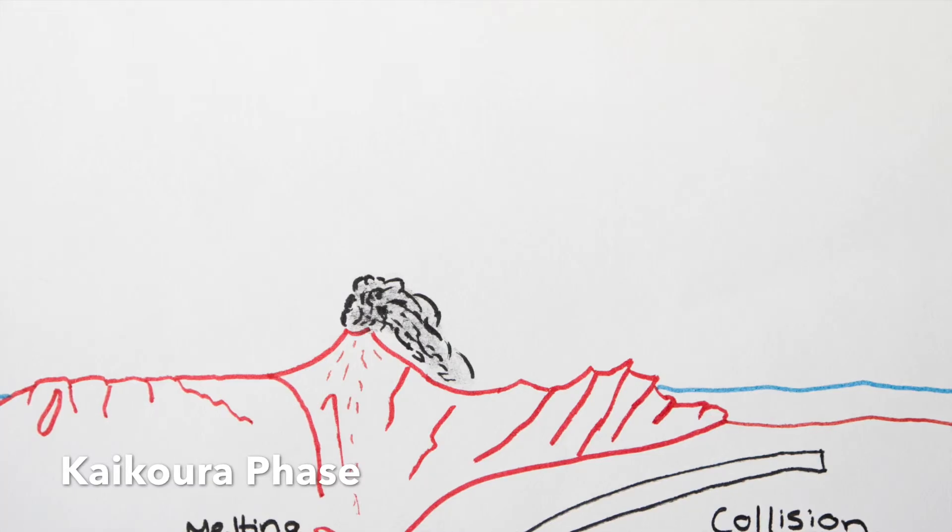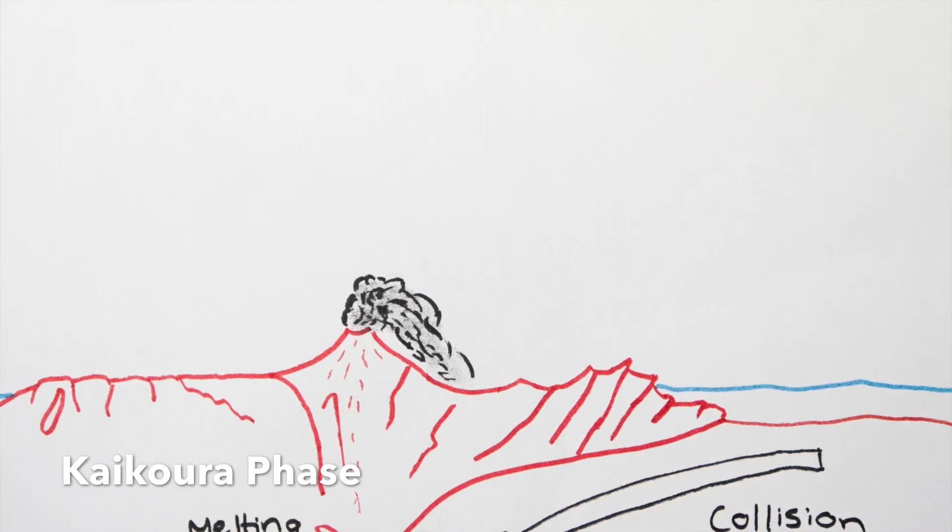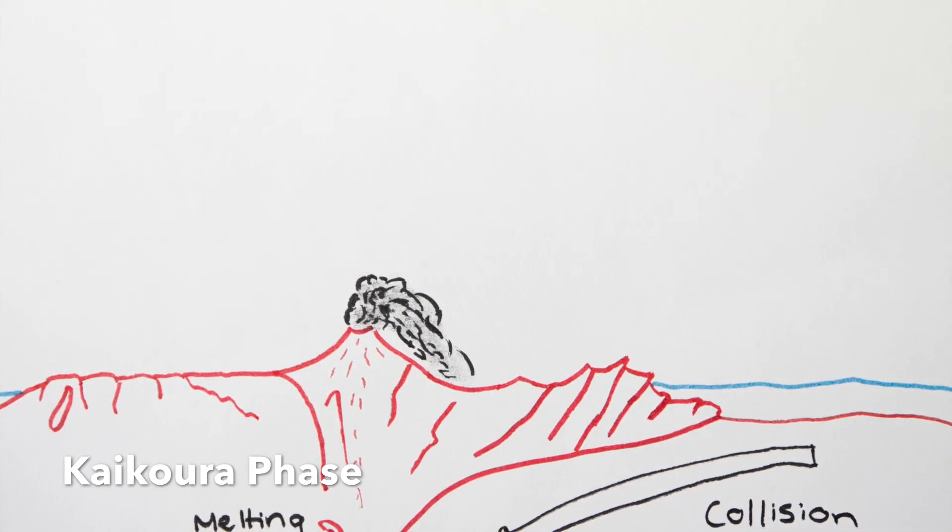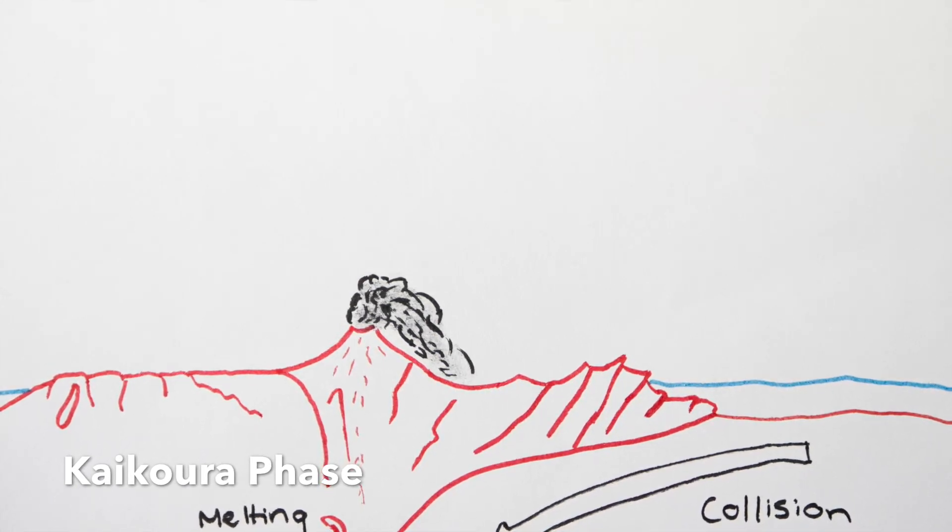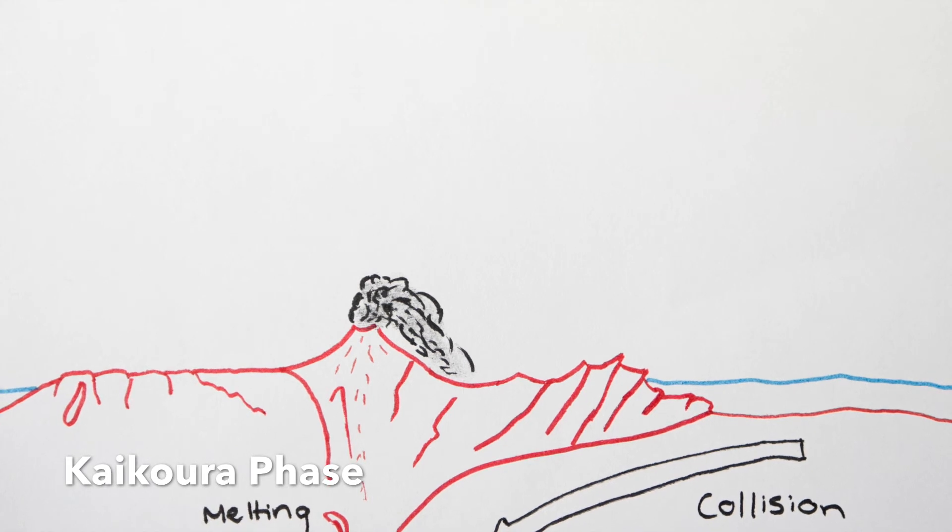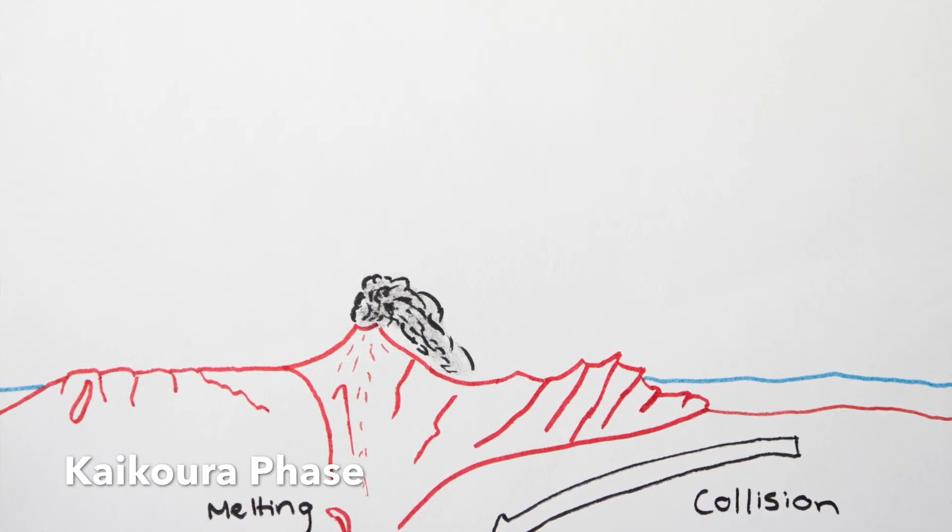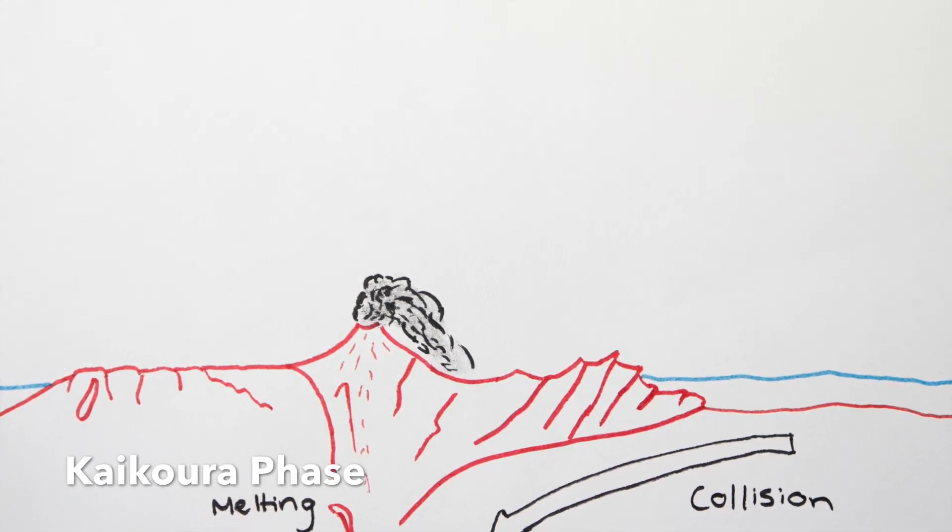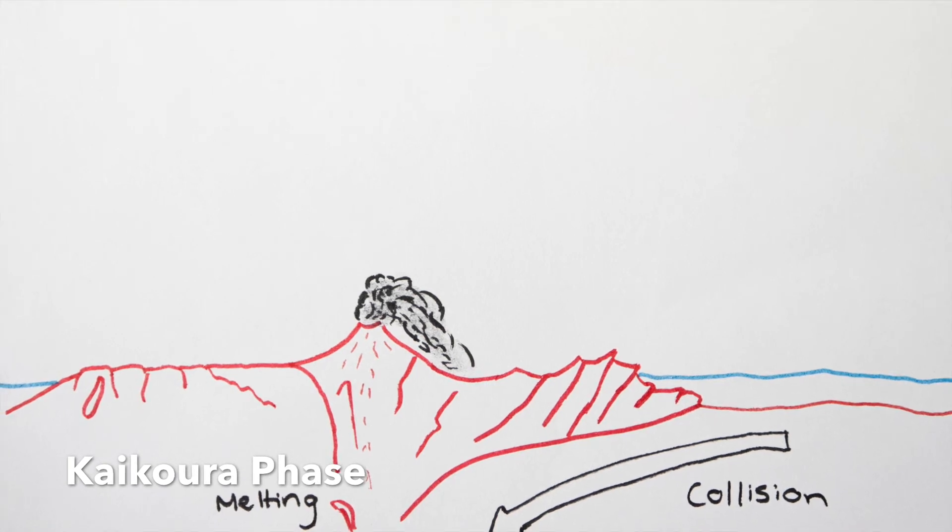25 million years ago, a new plate boundary formed between the Australian and Pacific plates, which we know as the Alpine Fault. This is an oblique convergent plate boundary and pressure from this has caused uplift of the Greywacke material to form the Southern Alps.